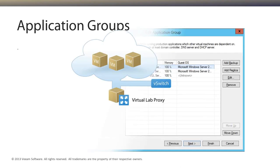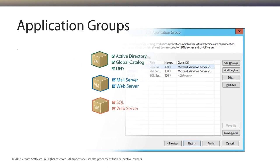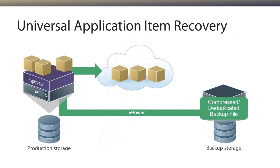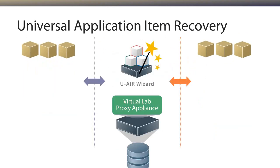Once you've defined your application groups, you can perform universal application item recovery — communicating from backup storage through the hypervisor into the virtual lab, then passing data through the virtual appliance to your production infrastructure. Whether it's SQL tables, rows, a script, a deleted user, or an Exchange object from Exchange 2003 — you can recover all of that. You can even use your own internal homegrown application: spin it up in the virtual lab, use your solution to integrate with it, and connect to it. This is really the power of having a virtual lab within your infrastructure.